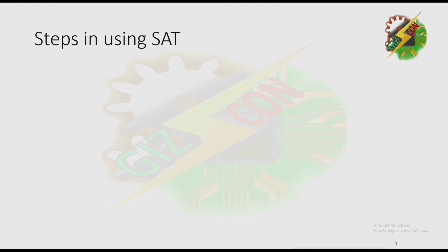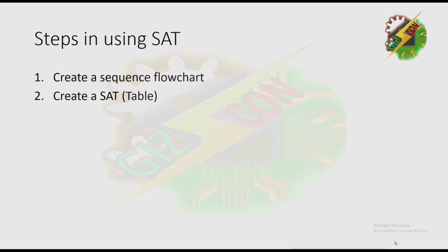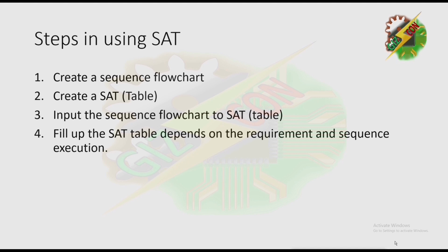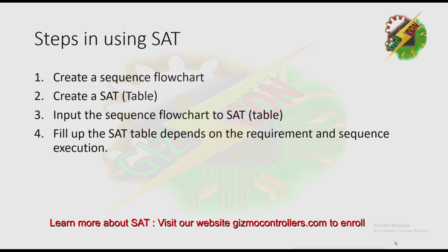The steps in using SAC are: first, create a sequence flowchart; then create a SAC table; input the sequence flowchart to SAC; fill up the SAC table depending on the requirement and sequence execution; and finally, convert SAC to a ladder diagram.